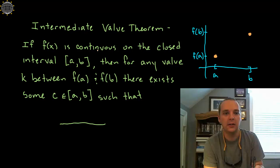It has got to be a continuous curve on a closed interval. Then for any value k between f(a) and f(b), and let's stop right there. What is k? Is k an x value or a y value?